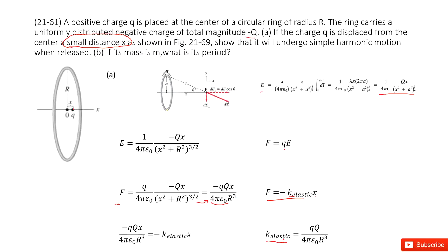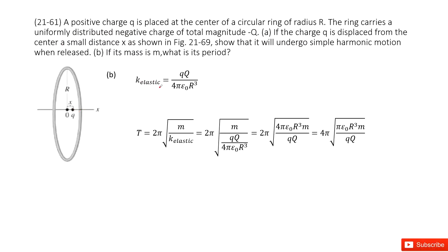Yes — this point charge undergoes simple harmonic motion because it satisfies the definition F = −kx. We also found the elastic constant. The next part asks: given the point charge has mass m, find its period. That's easy. We use the period formula for simple harmonic motion: T = 2π√(m/k). Substituting the elastic constant k we found, and simplifying, we get the final answer.